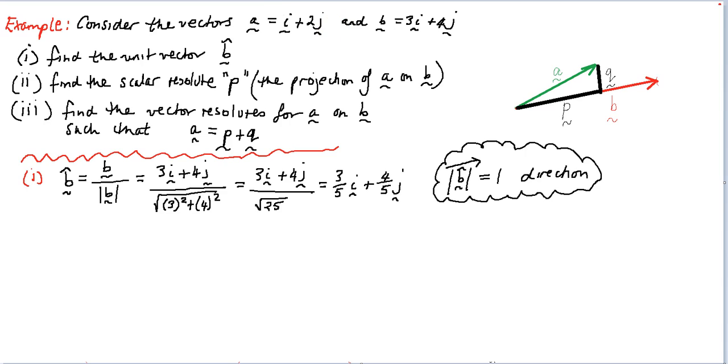So the next part is we want to find the scalar resolute. The scalar resolute is a measure of how much vector A protrudes onto vector B. So this black is indicating that's parallel to the vector B, is indicating the scalar quantity that represents P.